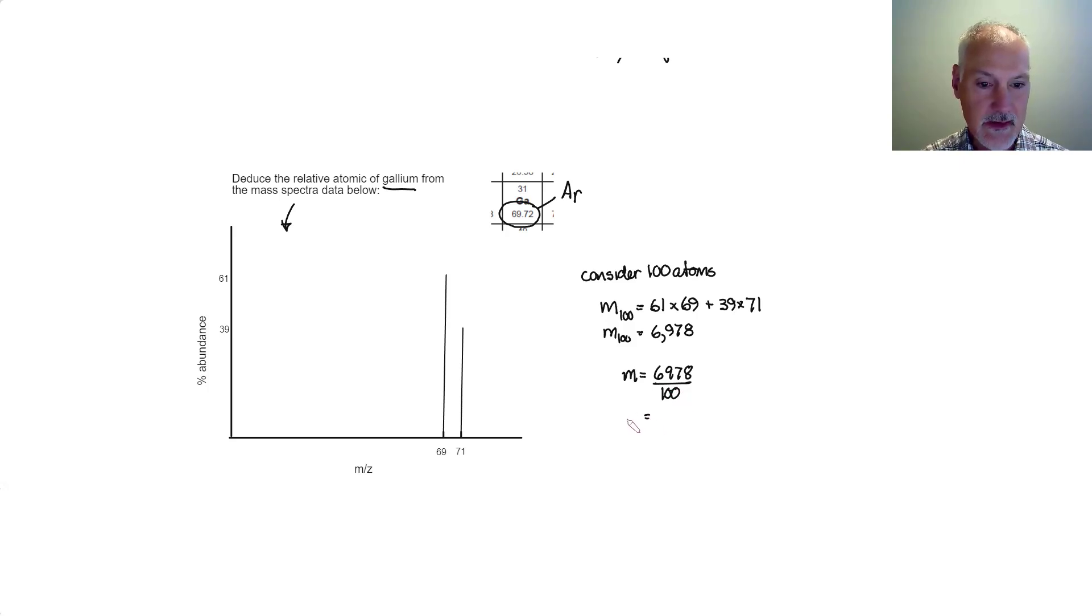Now, you'll notice it's not an exact match with what's on our IB data booklet because the data that's in your IB data booklet represents thousands of samples of gallium. And mine represents but one. So there's a use of mass spectra.